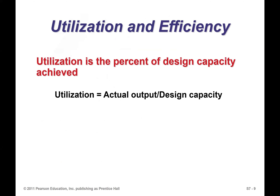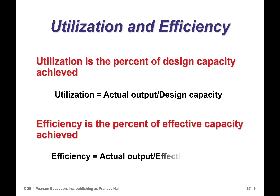Utilization is a percentage of the design capacity that is achieved — it's the actual output divided by the design capacity. Efficiency is the percentage of effective capacity that is achieved — efficiency equals actual output divided by effective capacity. So once you've found your effective capacity and your actual output, you can find your efficiency.